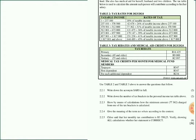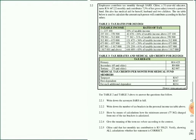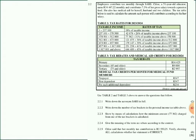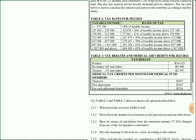So as you can see here in this question paper, I'm going to start by reading at the top: 'Employees contribute tax through SARS.' Chloe, a 51-year-old educator, earns R34,447.22 monthly and contributes 7.5% of her gross salary towards a pension fund. She also has a medical aid for herself, her husband, and two children. The tax table below is used to calculate the amount each person will contribute according to their salary.